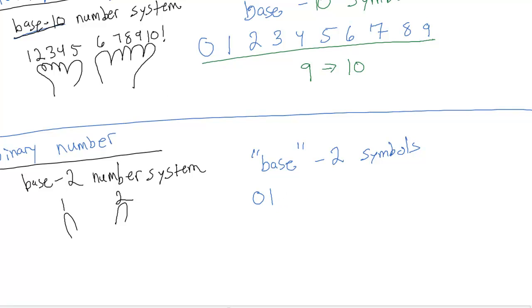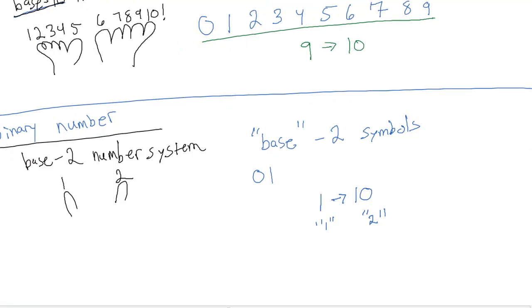If we wanted to count from 1 to 2, we'd actually have to write 1, and we don't have any more symbols to count upwards. We actually have to move over, so this would be 1, and this would be equal to 2. To get a clearer example...